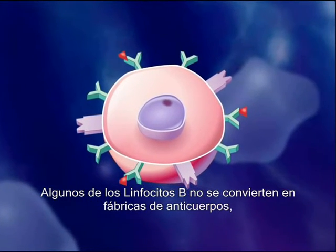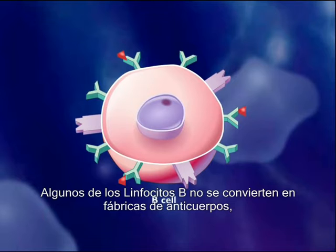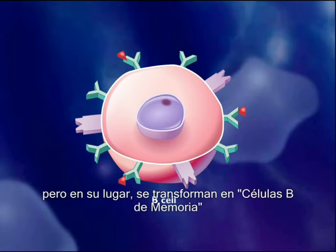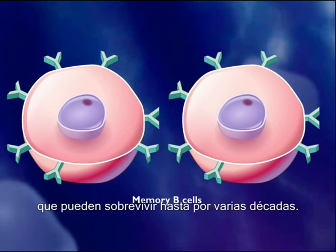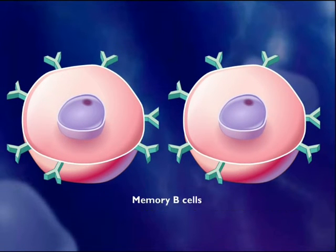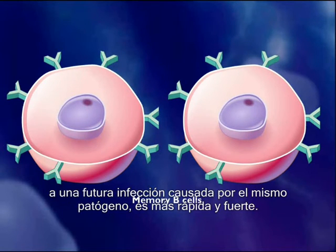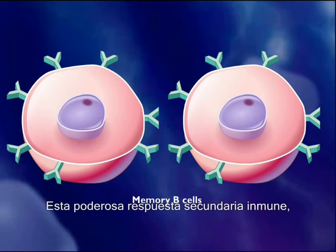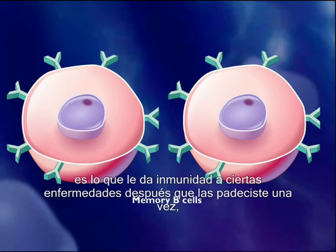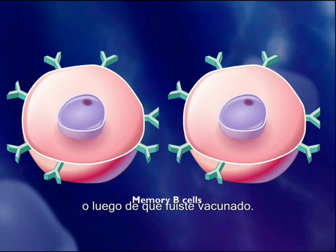Some of the B-cells do not turn into antibody factories, but instead become memory B-cells that may survive for several decades. Because of these memory B-cells, the secondary immune response to a future infection by the same pathogen is swifter and stronger. This powerful secondary immune response is what gives immunity to some diseases after you have had them once or after you have been vaccinated.